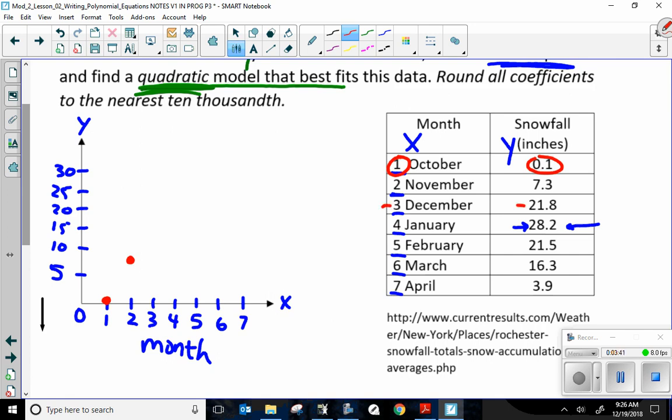3, 21.8. Okay, big jump. 3, 21 is just above 20. So, I will go maybe right there. That looks legit. 4, 28.2. So, I go to 4, and I'm almost to 30 up here. Maybe right there. Looks good.